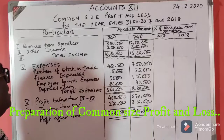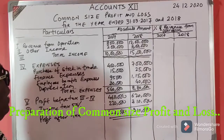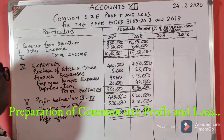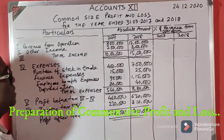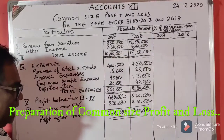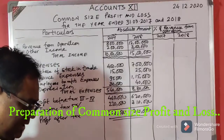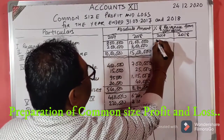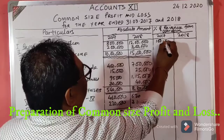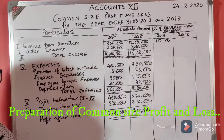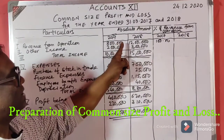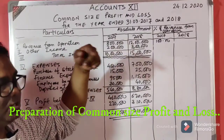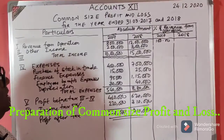Revenue from operations in 2017 is 8 lakhs. So the percentage for revenue from operations is 8 lakhs divided by 8 lakhs into 100, which gives 100 percent.